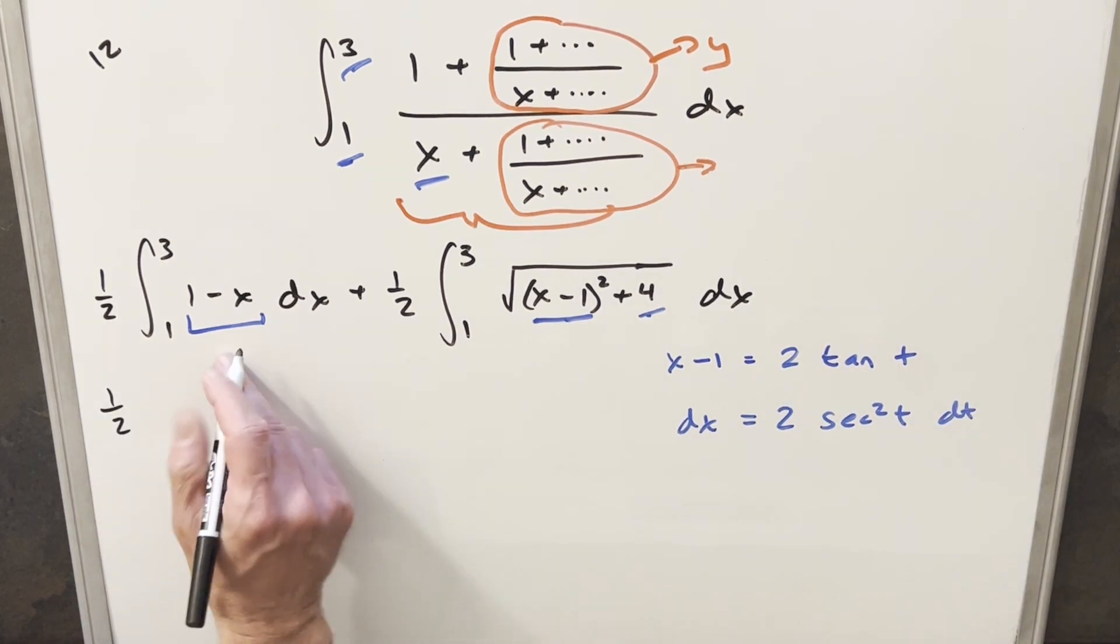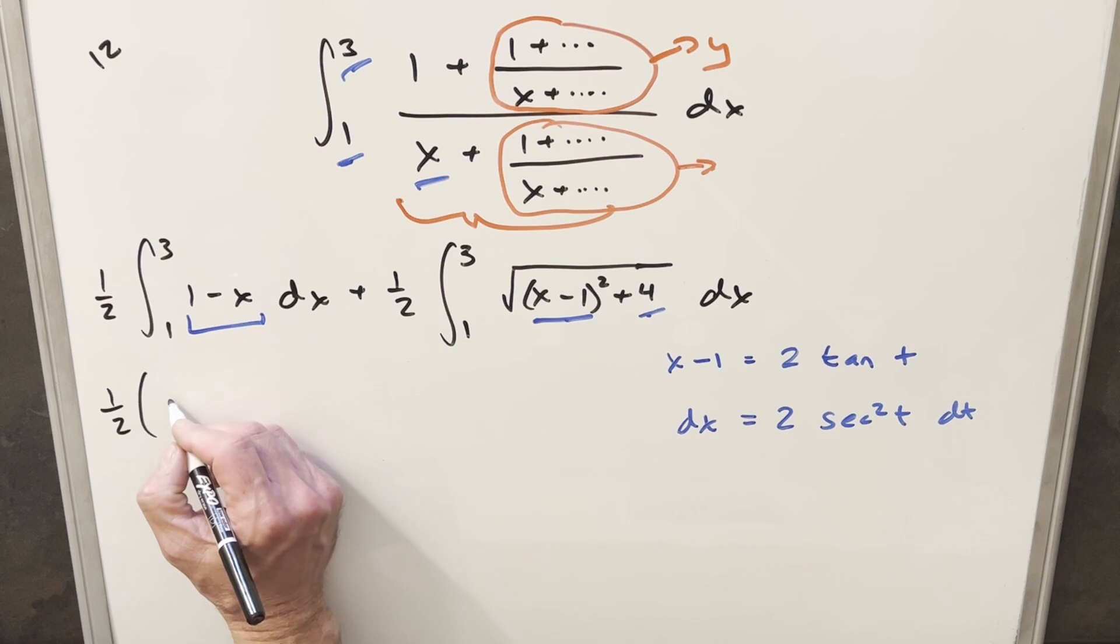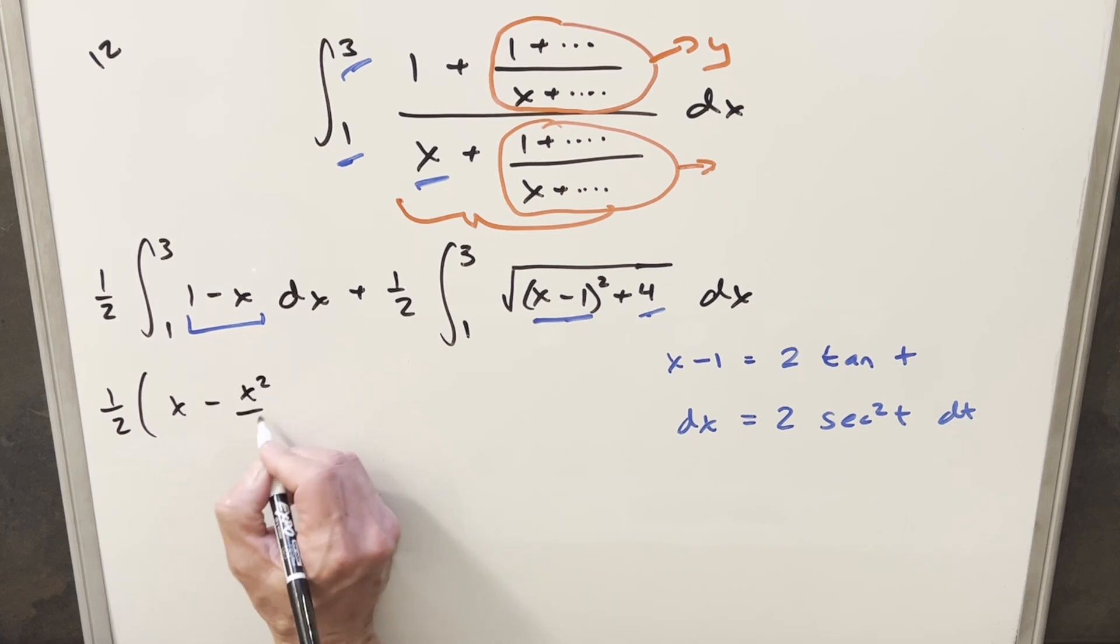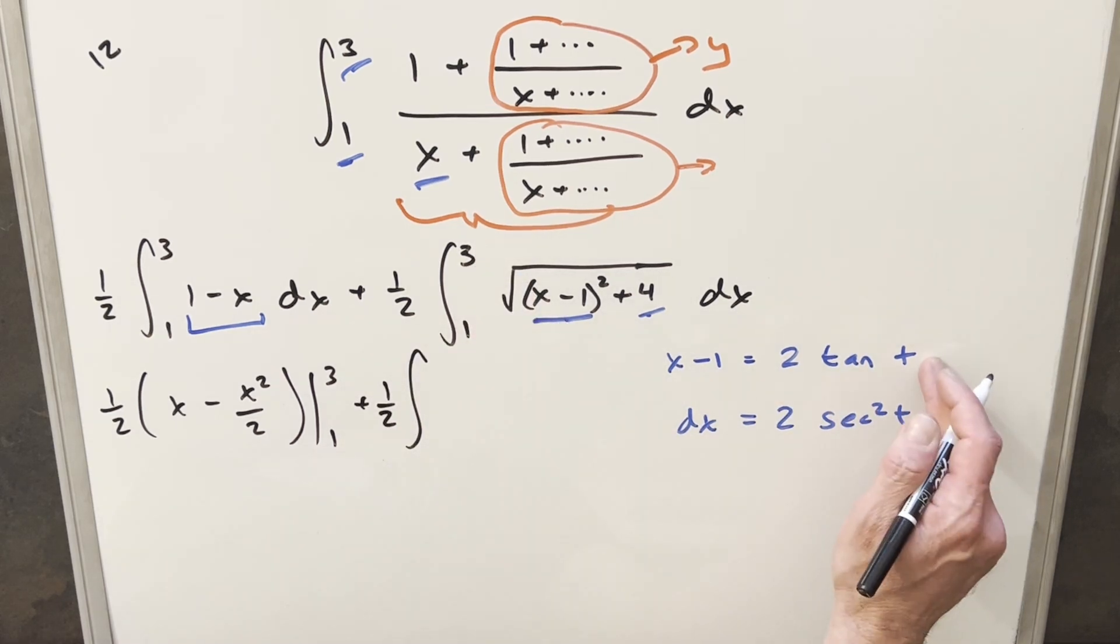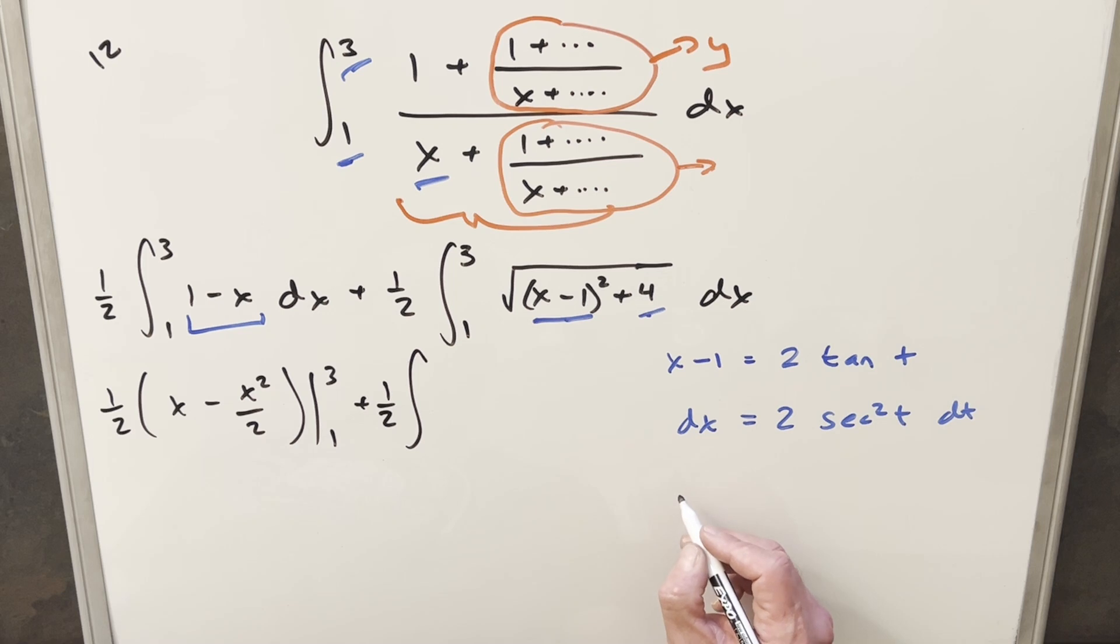And before I substitute, let's just integrate over here, because again, this is going to be easy. So integrating this, we're going to get x minus x squared over 2. And this is all going to be evaluated from 1 to 3. And then substituting over here, we've got 1 half in front. And then evaluating the balance, actually, let me solve for t. So what I'm going to do is, we can write this as, if I divide by 2 on both sides, I'll have x minus 1 over 2. And this is going to be equal to tan of t. But then solving for t, we get t equals just arc tan x minus 1 all over 2.